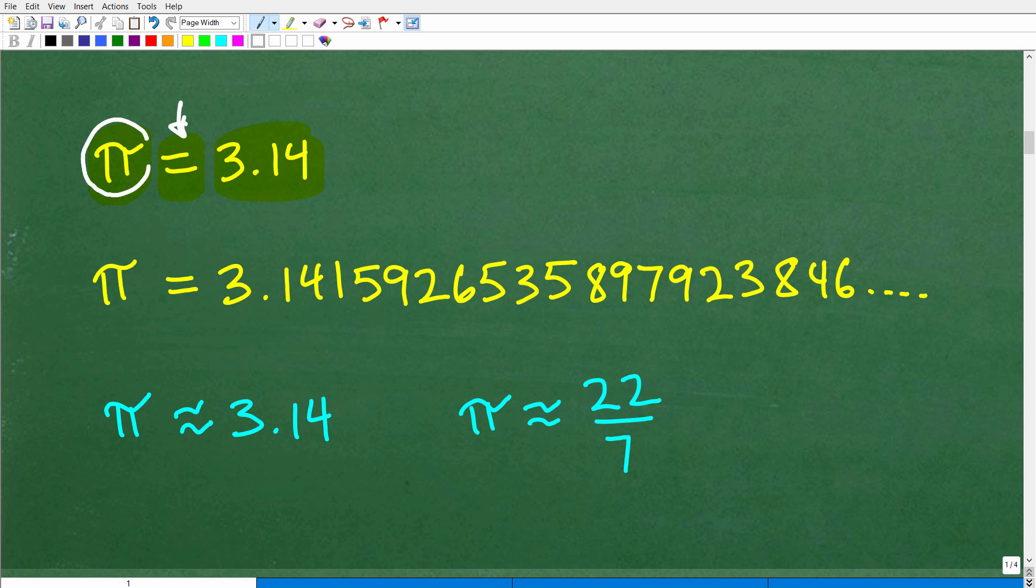But we're going to talk about this symbol here, equal. In mathematics, when you see an equal symbol like this, this means exactly equal. In other words, that this value is exactly this value. Let me give you an example. 2 is exactly equal to 2, or 2 is exactly equal to 1 plus 1. In other words, the left-hand value is equal, exactly equal, to the right-hand side of the equation. But here, there is a bit of a problem. Pi is not equal to 3.14.